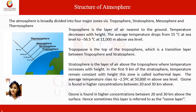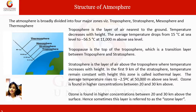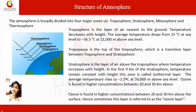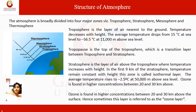The topmost layer of the troposphere is known as the tropopause, which is a transition layer between the troposphere and the stratosphere. The next segment is the stratosphere, where the temperature increases with height — from minus 56.5 degrees Celsius at the tropopause up to minus 2.5 degrees Celsius at a height of 50,000 meters above sea level.